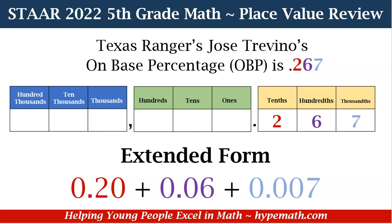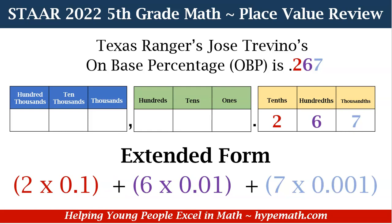Another way to write this number in expanded form is: 2 × 0.1 plus 6 × 0.01 plus 7 × 0.001. We can also say that as 2 times 1 tenth, plus 6 times 1 hundredth, plus 7 times 1 thousandth. When we multiply those out, they land in the same place as shown on the place value chart.